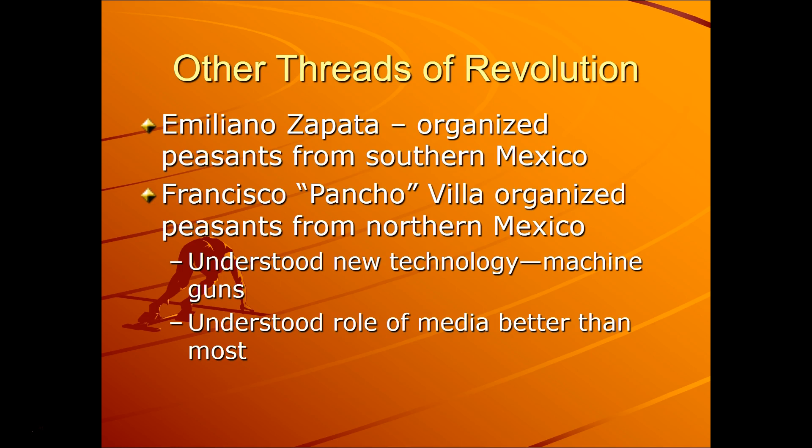Zapata organized peasants from southern Mexico who were neglected under the Diaz administration. Pancho Villa organized peasants from northern Mexico. They started to incorporate new technology like machine guns. They understood media, marketing, and iconography — a more modern way of thinking. The Mexican Revolution came late; the age of revolution had begun in 1750, and this is later in that story.